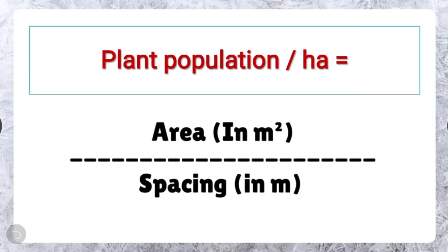At beginning, look at the formula for calculation of plant population. Plant population per hectare equals to area in meter square divided by spacing in meter. Spacing is row to row distance into plant to plant distance. We will clear this topic with examples.